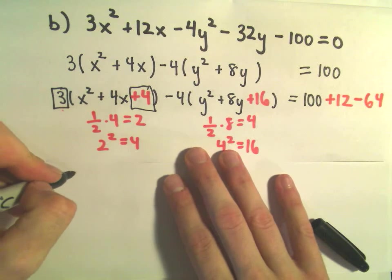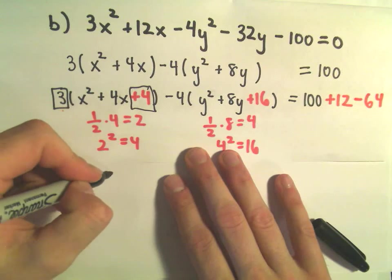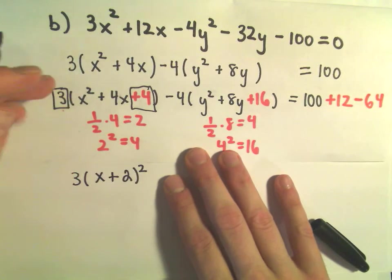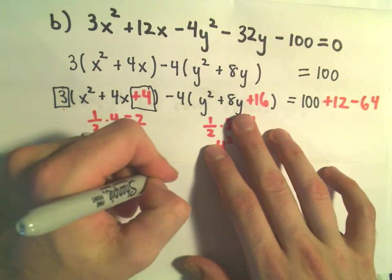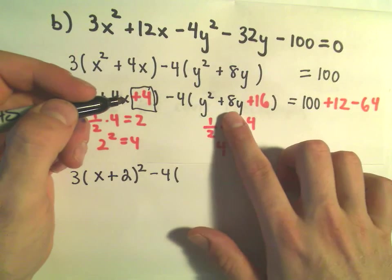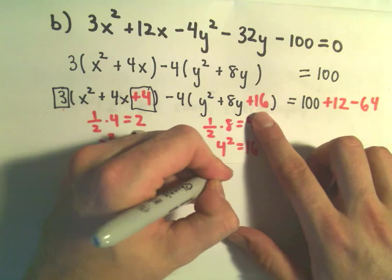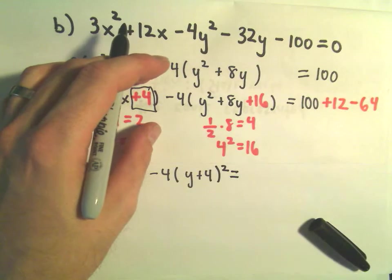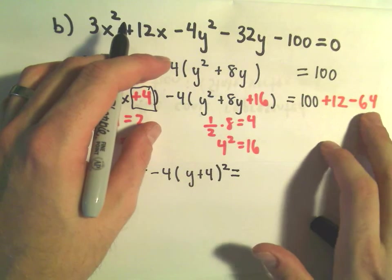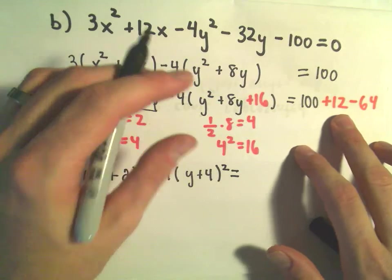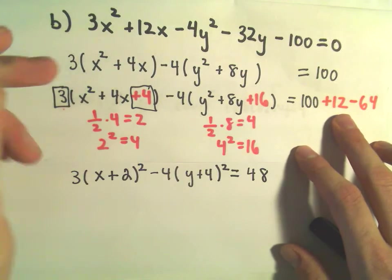Okay, so now we can write this as 3 times x plus 2 quantity squared minus 4 times y squared plus 8y plus 16, we can write that as y plus 4 quantity squared. And let's see, so 100 minus 64 would be 36 plus 12 would give us 48.